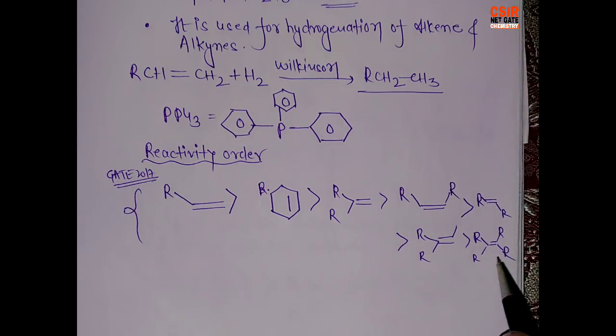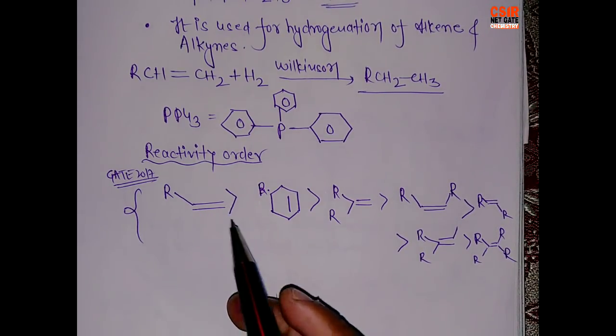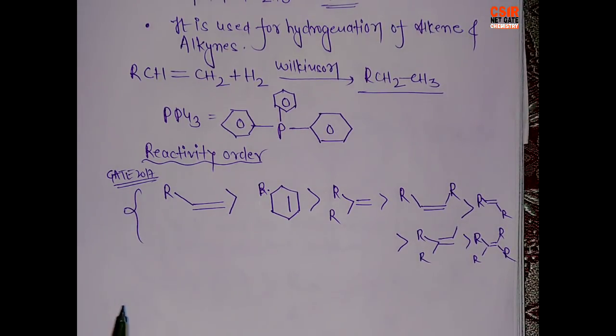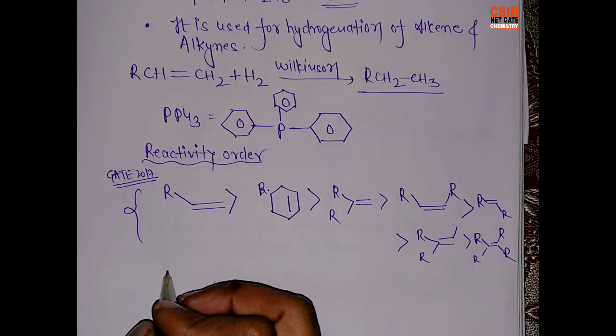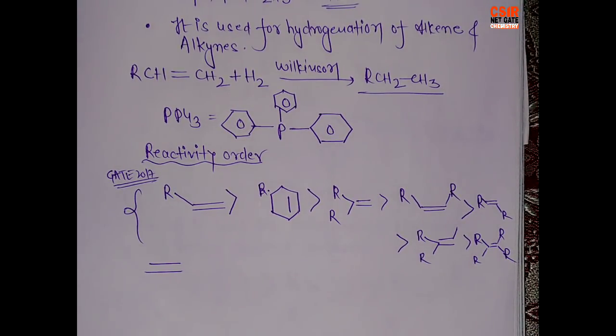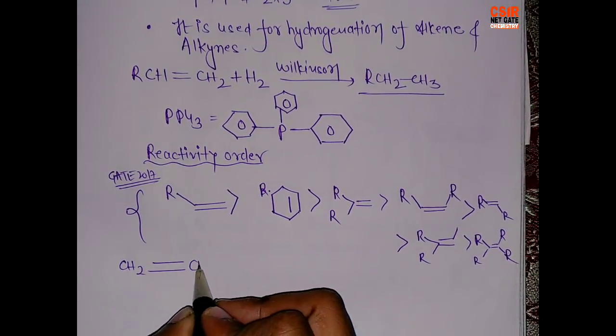And the last one is all the R groups. So this is the reactivity order for the Wilkinson catalysis. Here we have free ethylene, then this compound, then R group on the same side, then cis, trans. As you can see, here we have the most hindered, and this is least substituted, while this is more substituted.